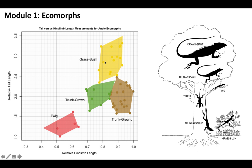On the other hand, the grass bush anole has about the same relative hind limb length as the trunk crown and trunk ground, but a much longer relative tail length. You can see that corroborated by the image — the grass bush anole has a really long tail compared to some of the others. The purpose of the long tail in that environment could be to help them run through grass or climb up small bushes.